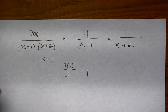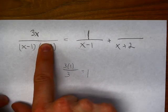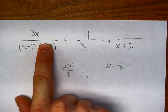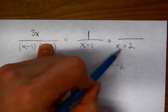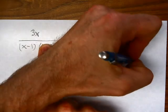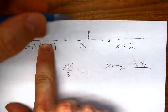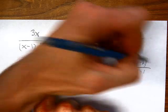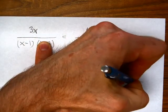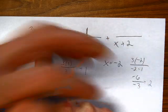All right, I'm going to do the same thing for x plus 2, but now I'm going to let x equal negative 2 because that's what would make this denominator equal to 0. And then I substitute negative 2 in here, so I get 3 times negative 2 over negative 2 minus 1. So that gives me negative 6 over negative 3, and that's equal to 2.